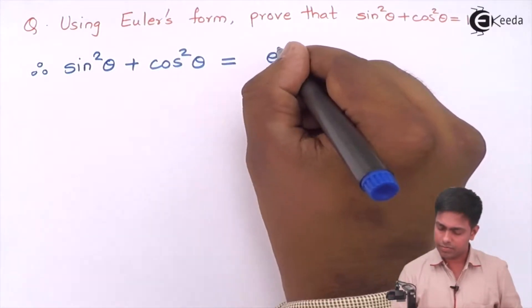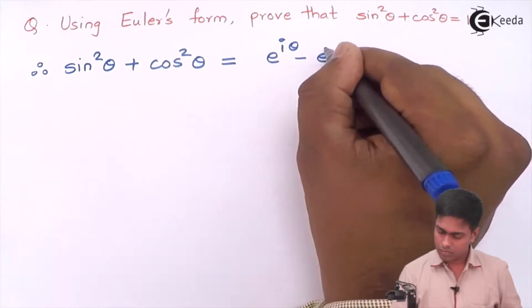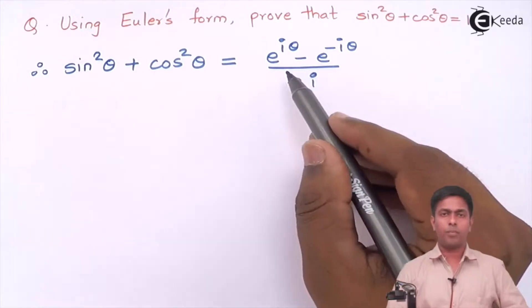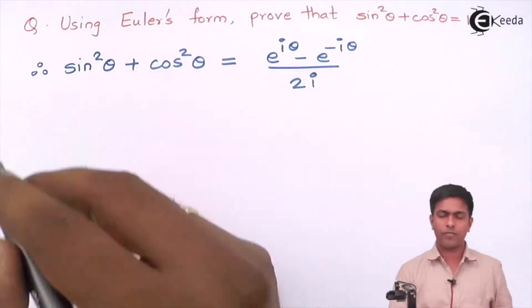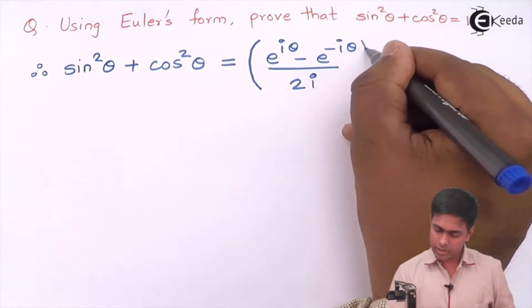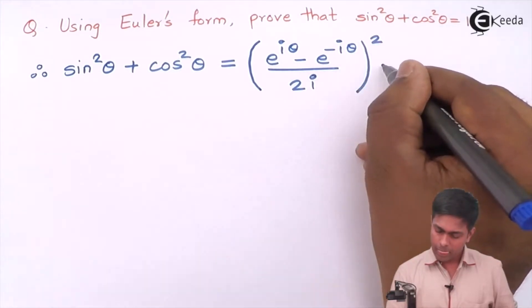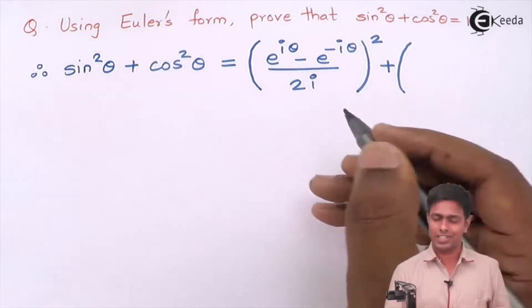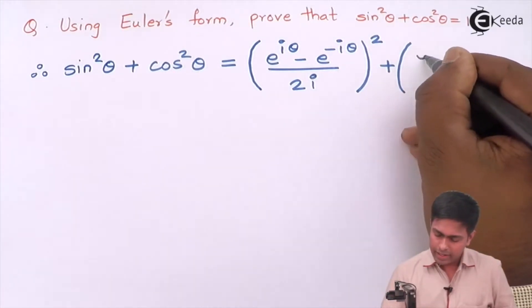So sine theta is, this is the Euler's form or the exponential form of sine theta. Now we want square so I will square this bracket here. Plus, let's write down the value of cosine theta which is e raised to, and square of that.